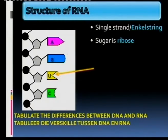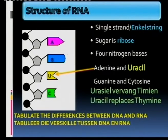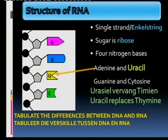If you can remember, the sugar of DNA is deoxyribose. Then we have four nitrogenous bases. Where RNA differs from DNA: we still have adenine, we still have guanine, we still have cytosine.